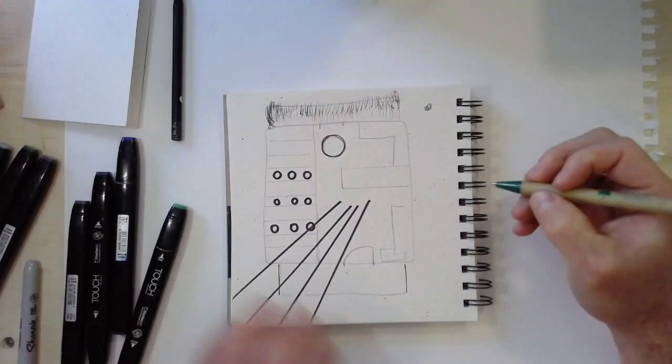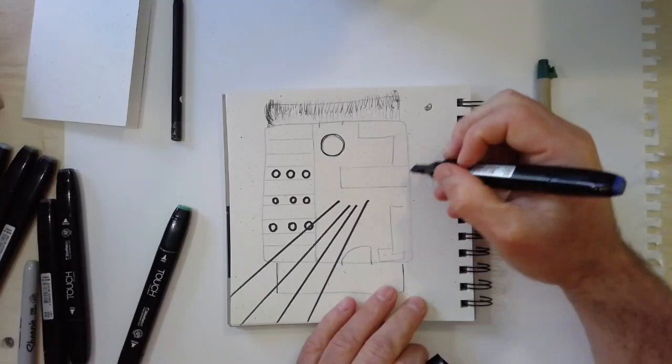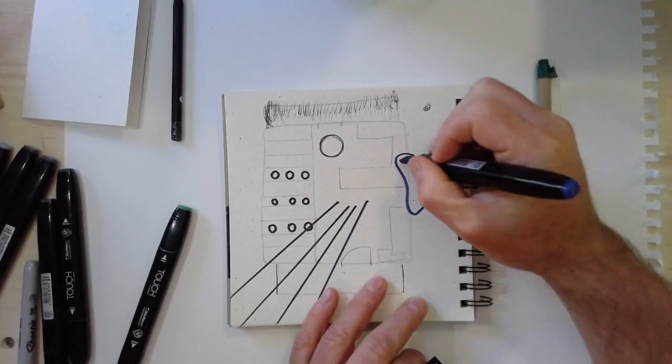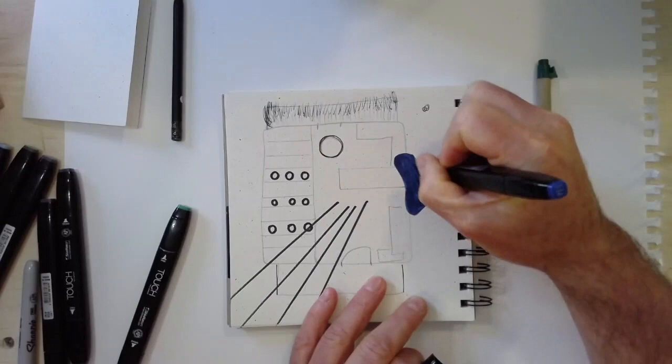And I'm going to switch to a color now. So I don't have that many different colors, but you can use whatever you've got. And I'm going to make just a freeform organic shape. And I'm going to color it in. And I'll do another one here.